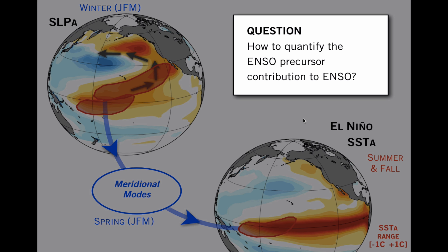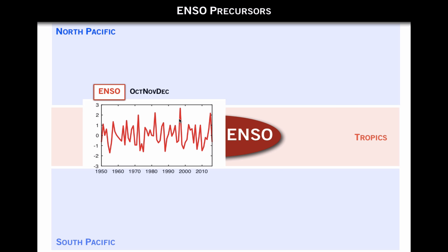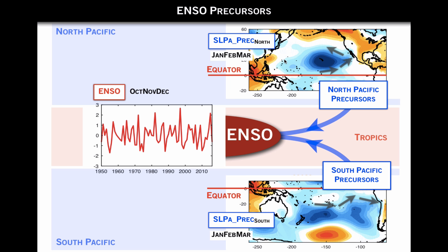To do that, I'm going to look at seasonal data, and I'll begin by making an index of ENSO in the months of October, November, December by taking the SST anomalies during that season in a tropical box and computing the first EOF, which essentially captures ENSO. Now once we have this index, we can do a nice exercise. We can take this index in October-November-December and make a correlation with the sea level pressures in the preceding January-February-March period for both the Northern and Southern Hemispheres. When you do that, you recover essentially the atmospheric anomalies associated with these precursors in the North Pacific and in the South Pacific.